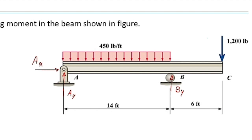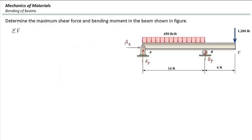There are three equilibrium equations in general that you can use for determining those reaction forces. First, the sum of the forces in the X direction is going to be equal to zero. There is just one force in the X direction, so A sub X is equal to zero. The other one would be sum of the forces in the Y direction equal to zero. In that case, there are two forces pushing the structure downward: P plus W multiplied by the length — the resultant force of the distributed load would be W multiplied by A. That equals two reaction forces in the Y direction, A sub Y plus B sub Y.